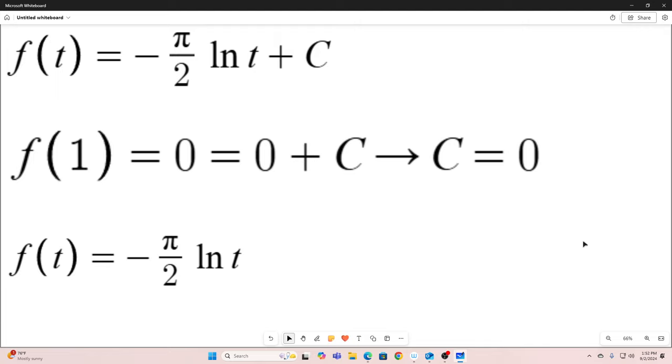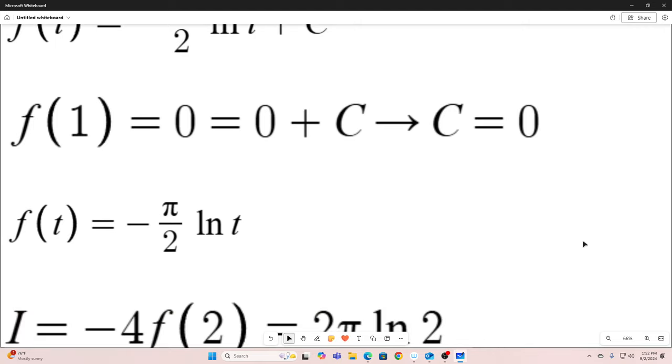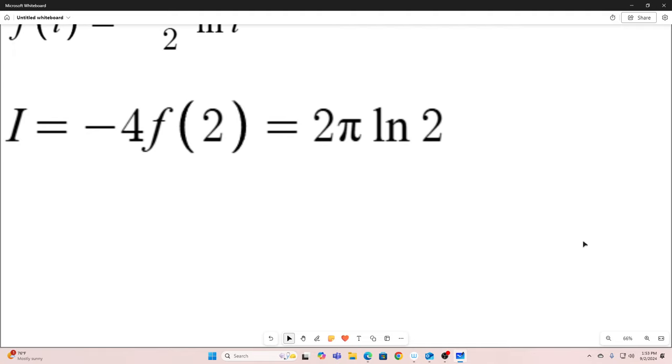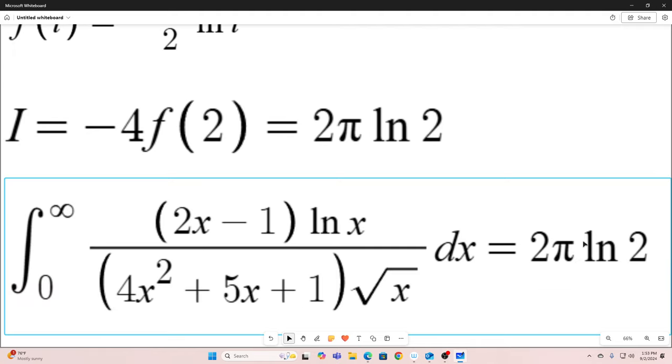All right. So now we have it. We have our f of t. All we need to do is multiply it by negative 4 and evaluate it at the point t is equal to 2. So that's what we do. That gives us 2 pi natural log 2. All right. So in conclusion, this integral that we started with all the way at the beginning is simply equal to 2 pi times the natural log of 2.